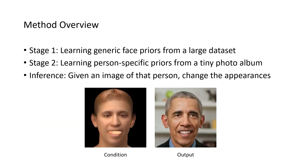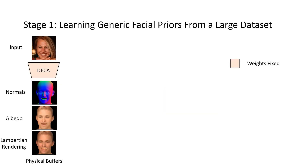Finally, after Diffusion Rig learns personalized priors, we can use the model to edit the facial appearance of that person while preserving their identity and high-frequency facial characteristics. At Stage 1, given the input, we use DECA to estimate the physical buffers including normals, albedo, and Lambertian rendering. As they can be easily manipulated in a physically meaningful way, we would like those buffers to drive or rig the image synthesis process.